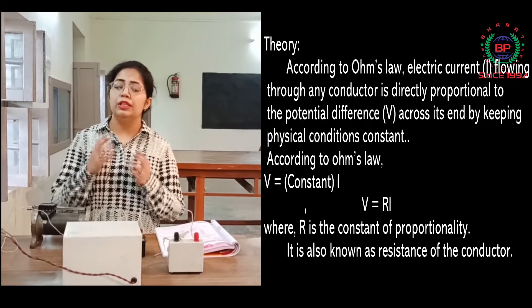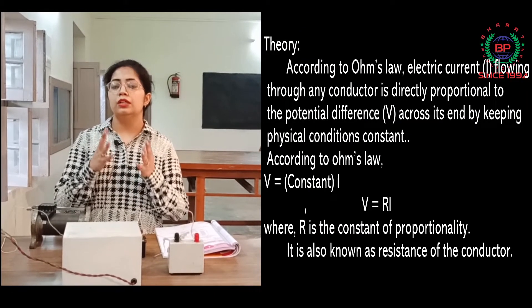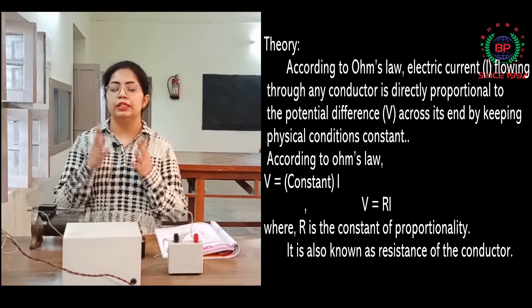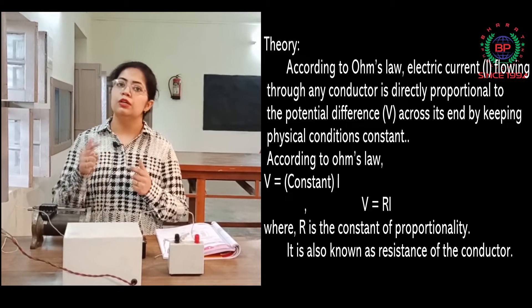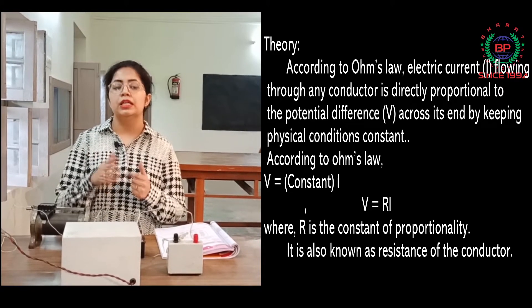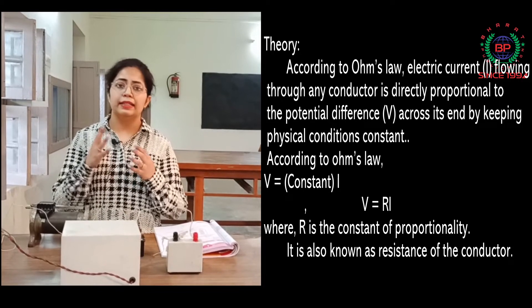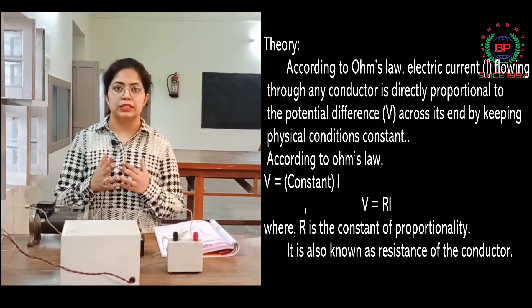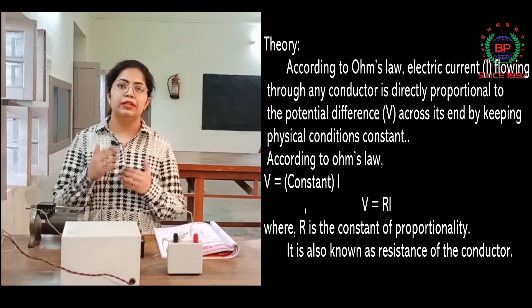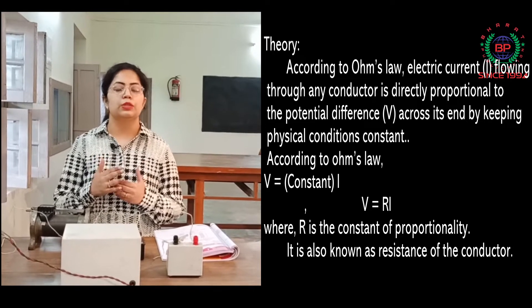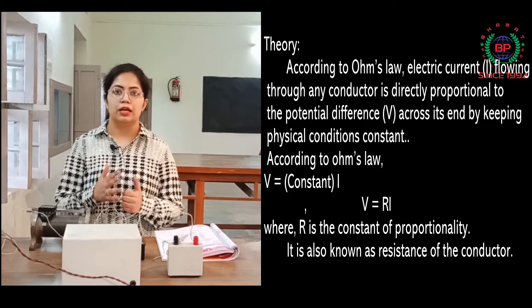When we remove the proportionality sign, we introduce a constant of proportionality R, which is known as resistance. Then we get the equation V equals IR.